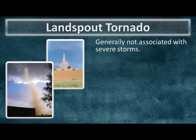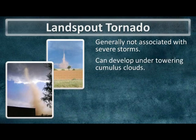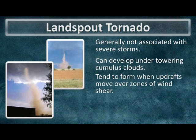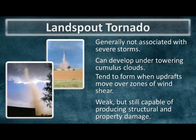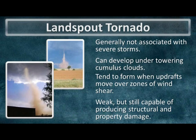The next type of circulation we're going to talk about is a land spout tornado. These types of tornadoes are usually not associated with severe thunderstorms — they're usually associated with towering cumulus clouds that are either developing into thunderstorms or are already thunderstorms. When updrafts of these towering cumulus move over zones of wind shear, this is usually when we see the land spout tornado. These are very weak compared to a tornado, but are still capable of producing structural and property damage, such as throwing shingles off a roof, causing roof damage, throwing around empty garbage cans, or damaging a weakly constructed fence.